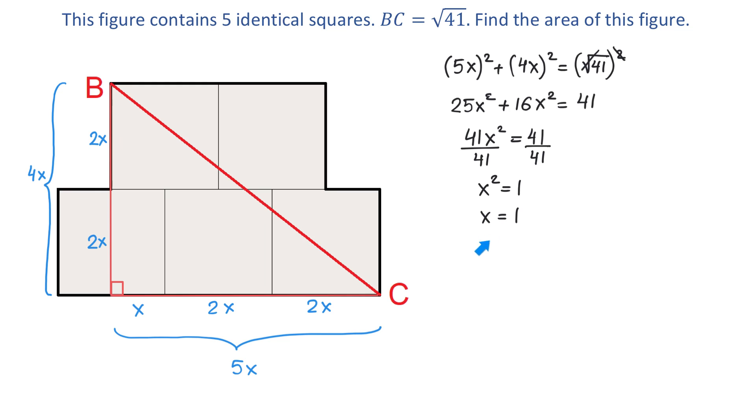So, we found X and X represents half of a side of a square. Then, to find the whole side, we will multiply 1 by 2 and one side will be 2 units.